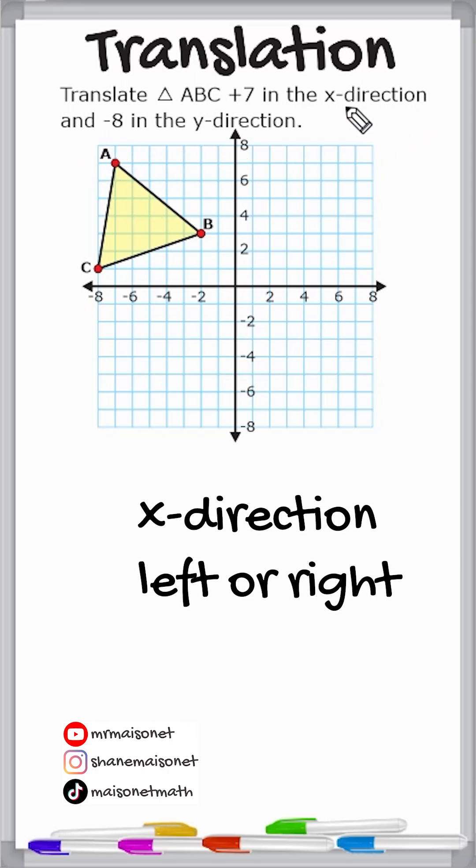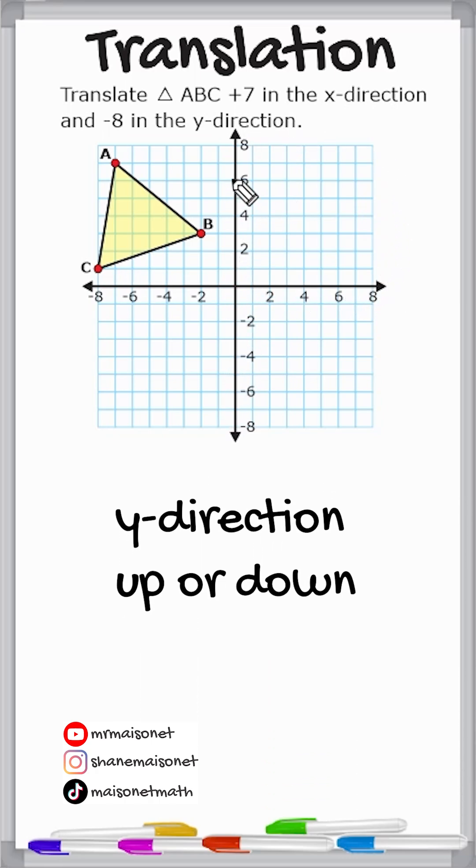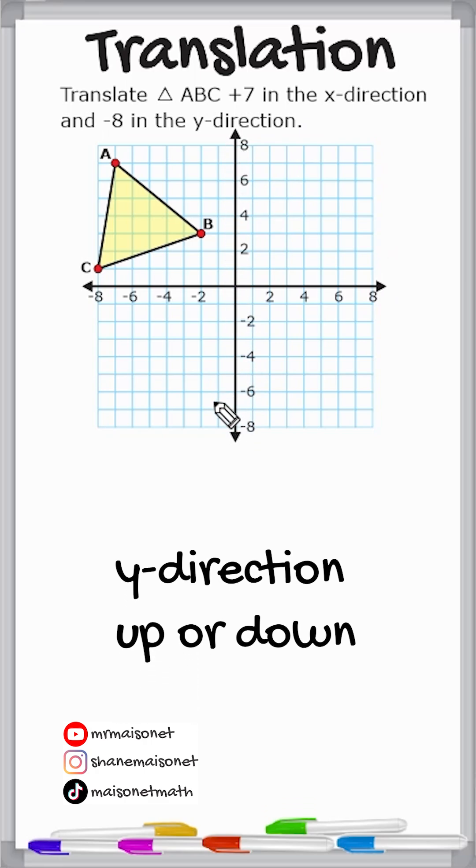Now the x-direction just means left to right because our x-axis goes left and right. And the y-direction just means up or down because the y-axis is going up and down.